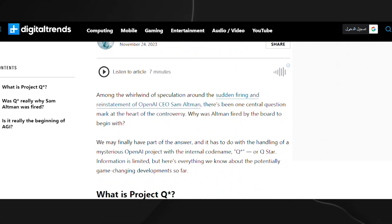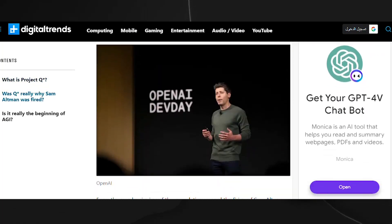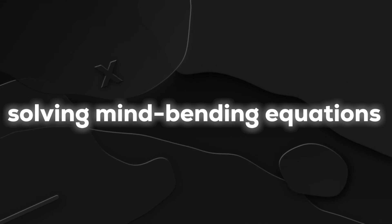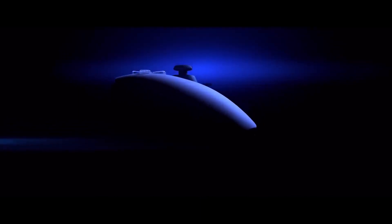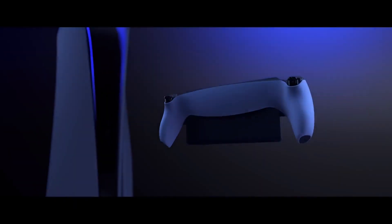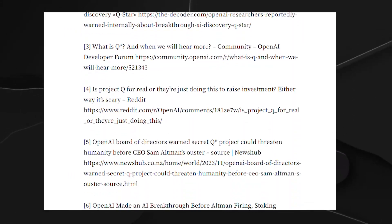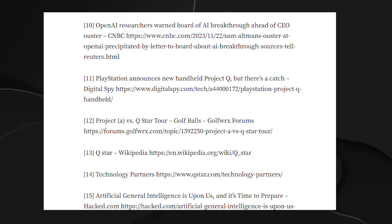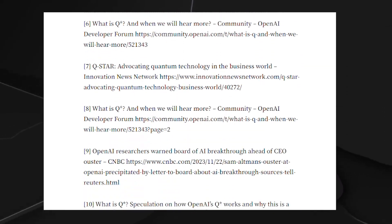Project QSTAR Unveiled. Recent reports have given us a sneak peek into this cutting-edge model, showcasing its prowess in learning and tackling mathematical challenges. Before you imagine it solving mind-bending equations, we're not there just yet. However, the potential for such capabilities is undeniably on the horizon. The mere existence of Project QSTAR has caused quite a stir, raising concerns about its impact on humanity. A rift has emerged within the AI community: on one side, excitement about pushing the boundaries of machine learning; on the other, genuine concerns that QSTAR could pose threats to humanity. The drama isn't just about technological prowess — it's about the ethical and existential questions it raises.